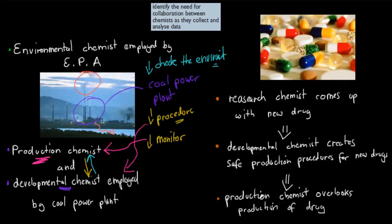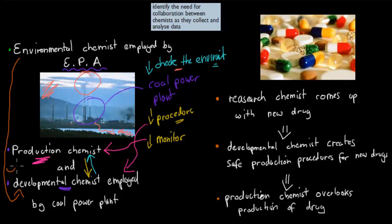We also have the environmental chemist, who might be employed by the Environmental Protection Agency. They check samples from the atmosphere and the river to see if there's any pollution. Whether there's a problem or not, the environmental chemist communicates with the production or developmental chemist. If there's too much pollution, the developmental chemist must refine the procedure. This is an example of collaboration — they all talk to each other because no single chemist has expertise in every area.